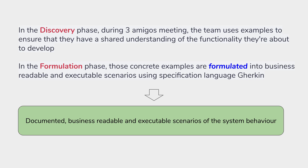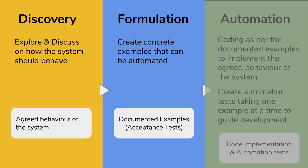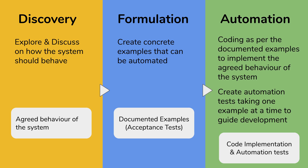The outcome of the formulation phase is the documented, business readable, and executable scenario of the system behavior, which can directly be used by BDD tools like Cucumber. So the three phases of BDD are: discovery, formulation, and automation. In the automation phase, the documented business readable and executable examples can be converted into automation tests using BDD tools like Cucumber, and those tests can further guide the development process.